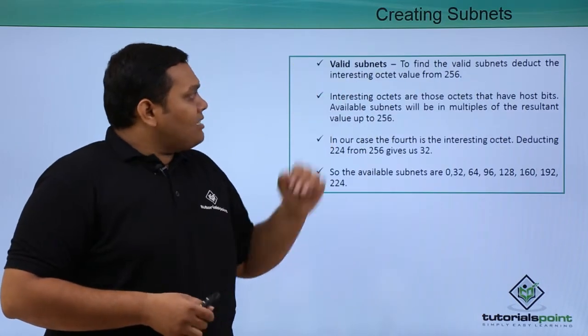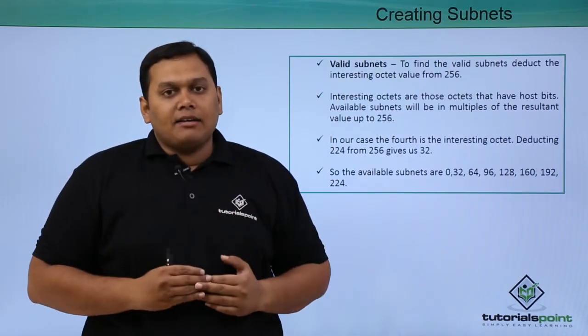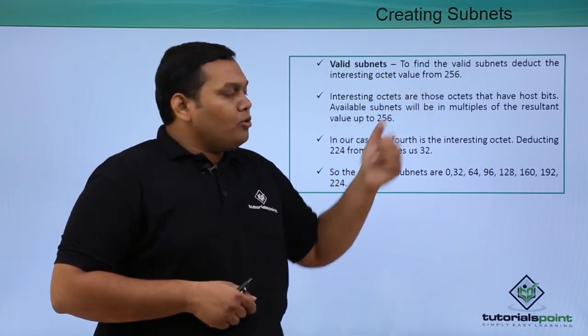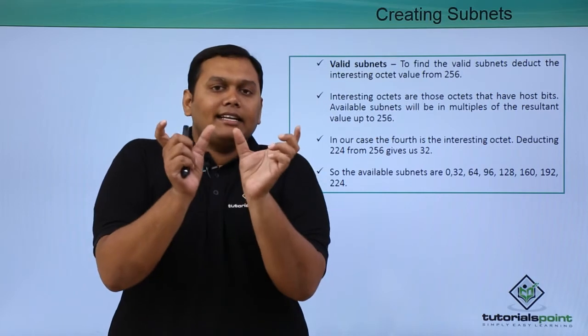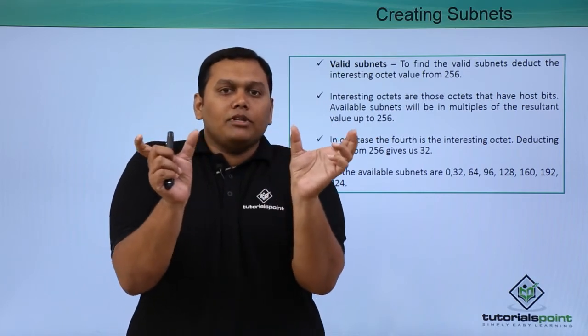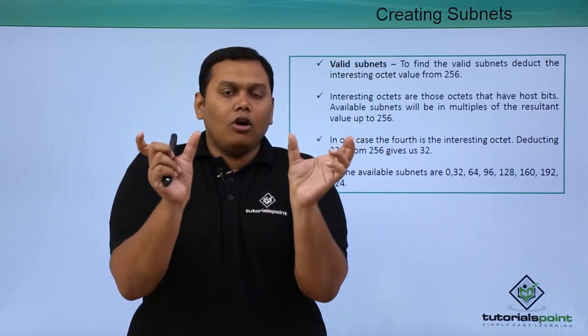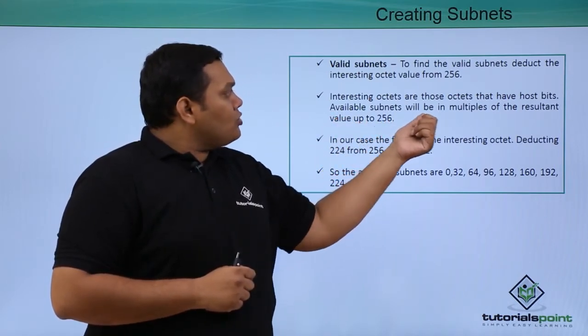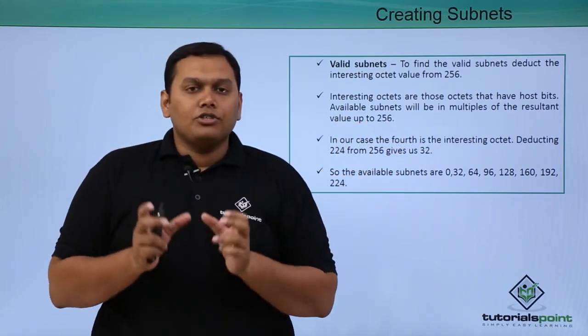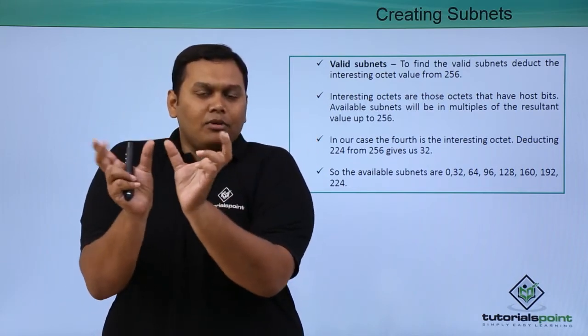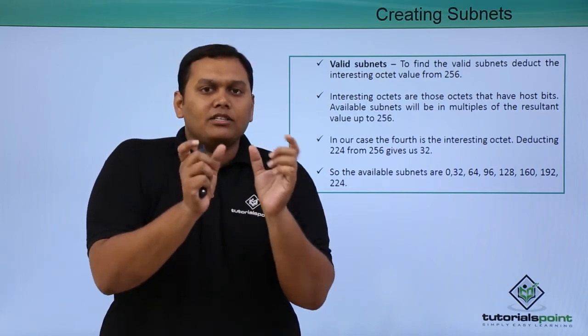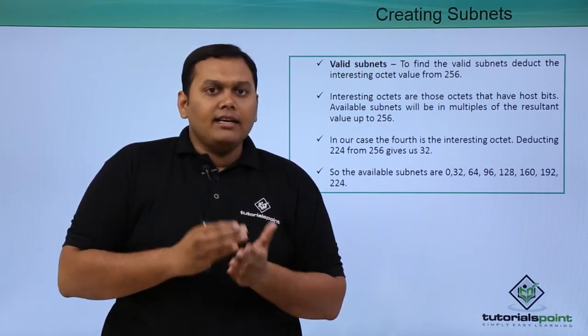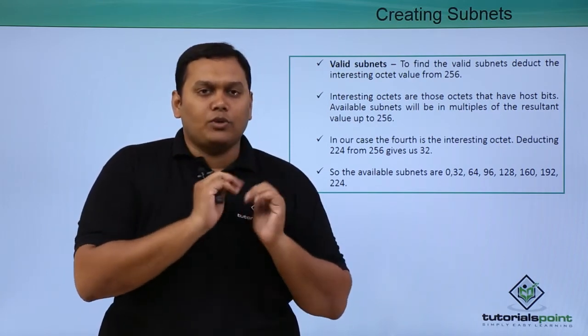Here are the valid subnets. What is the valid subnet here? The valid subnet deducts the interesting octet value from 256. Here it will deduct the subnet value from the 256 host available on the octet. Interesting octets are those octets that have host bits. So wherever host bits are available, they are called valid subnets, so that we get the requirement of 8 networks and 30 hosts in each network.